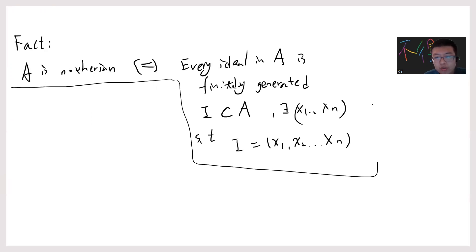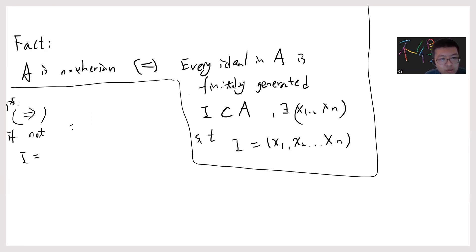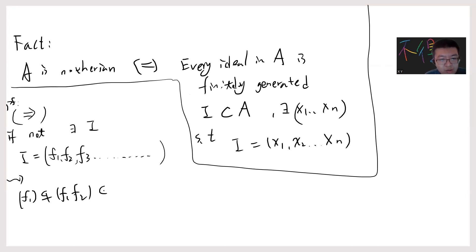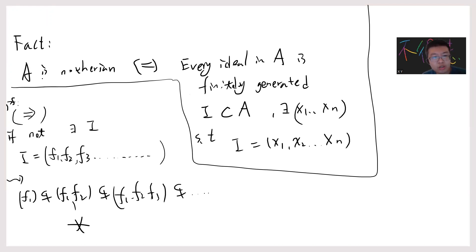So let me just give you the proof. This direction should be trivial, right? Because if not — if you can find an ideal which is infinitely generated — you can basically view this ideal as being generated by f₁, f₂, f₃, and keep going. And assuming these are all non-trivial, meaning f₃ is not in the ideal generated by f₁ alone, and f₃ is not in the ideal generated by f₁ and f₂, and so on, then obviously you can create an infinite chain. This contradicts that A is a Noetherian ring, so proof is complete.